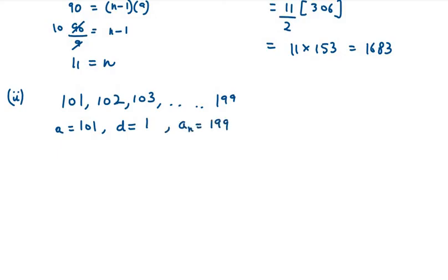Now we need to find the value of n. So you get an as a plus n minus 1 d. an can be written as 199 equals 101 plus n minus 1, d value is 1. So 199 minus 101 will be 98 equals n minus 1.